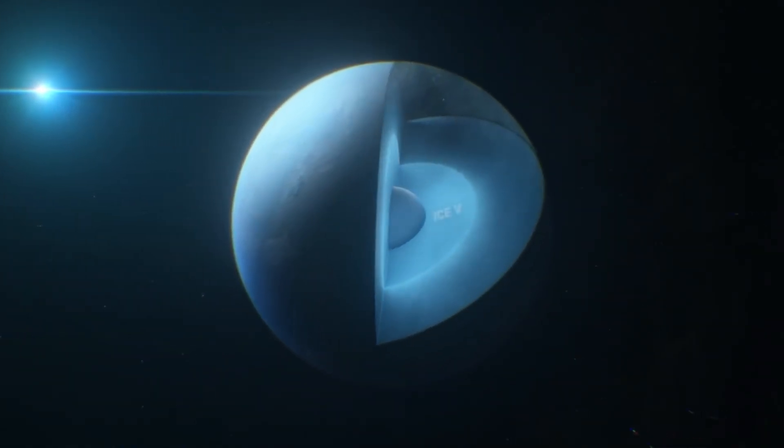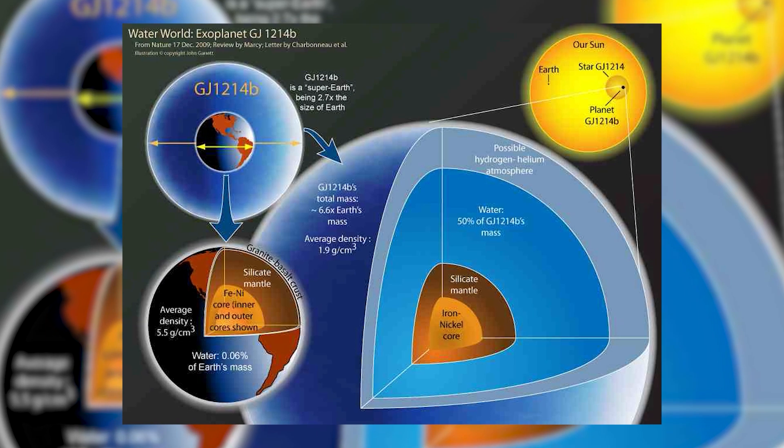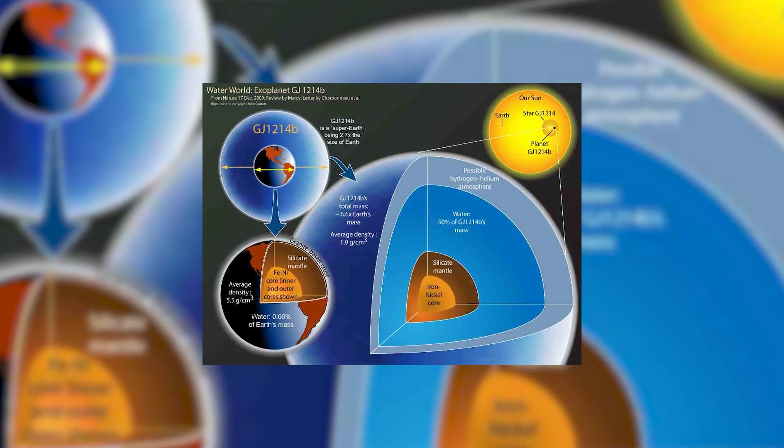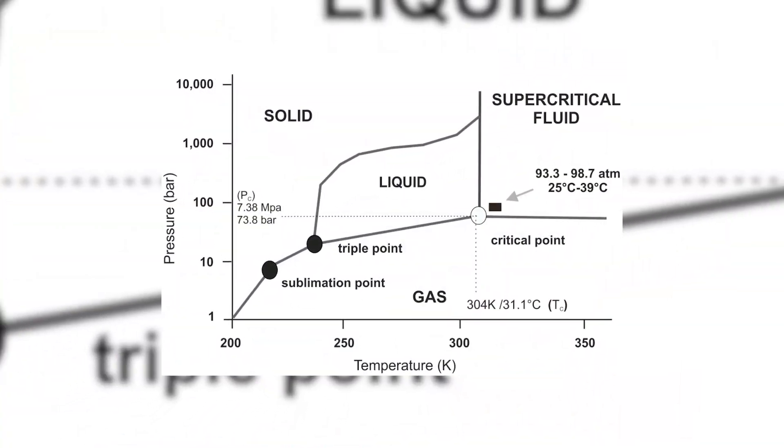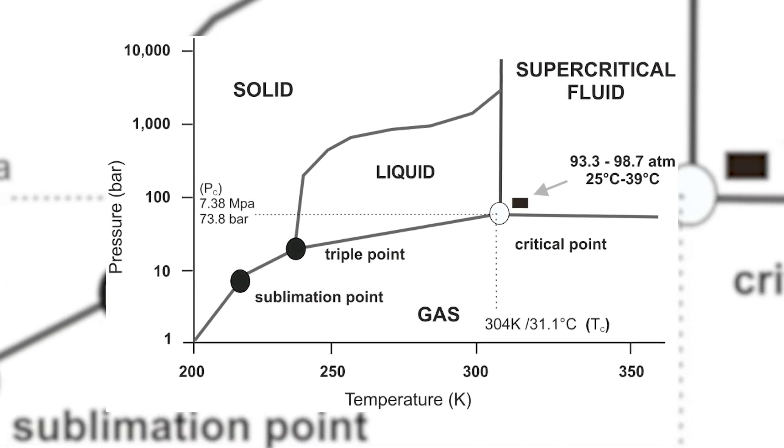The extreme pressure and heat have transformed its atmosphere into a peculiar plasma form of water. Despite scorching temperatures of 280 degrees Celsius, the water on GJ1214b doesn't exist in the familiar vapor, liquid, or gas phases. Instead, it remains in a constant supercritical fluid form, displaying properties of both liquid and gas simultaneously.